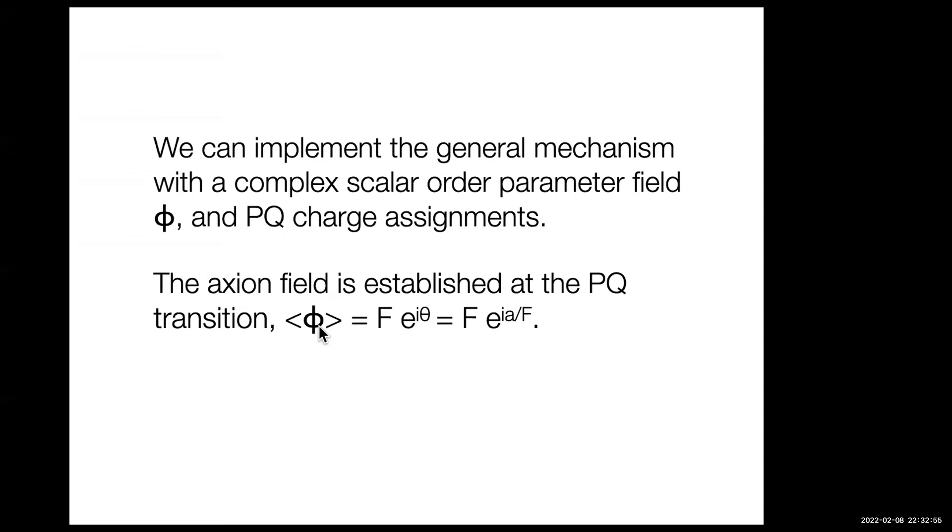When you have an expectation value for that, you get a spontaneous breaking of the underlying symmetry, and then you minimize and go down to theta equals zero. But there's a residual quantum field that carries very little energy compared to the very large symmetry breaking scale F. There's one associated with the QCD scale that gives you a degree of freedom with very small mass, and that's the axion.